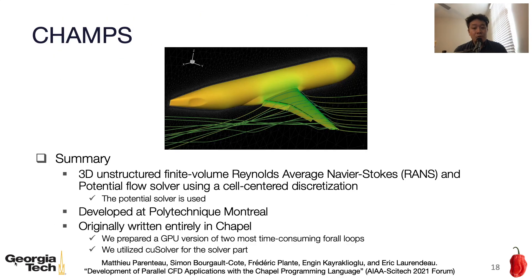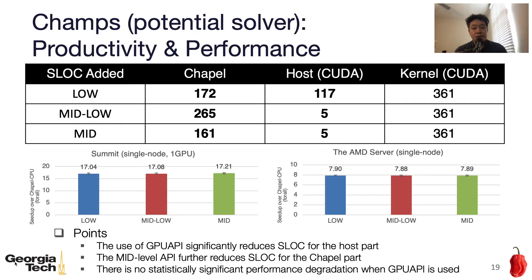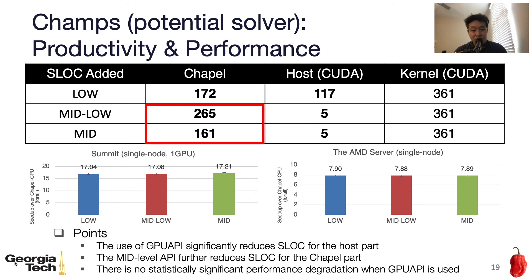The first application is CHAMPs, which is a CFD application that is a Reynolds-averaged Navier-Stokes and potential flow solver. In this evaluation, we used the potential solver. The application is developed at Polytechnic Montreal and originally written entirely in Chapel. To enable GPU execution, we prepared a GPU version of the two most time-consuming forward loops, and we also utilized cuSOLVER for the solver part. The table shows source lines of code added for enabling GPU execution. The use of our GPU API significantly reduces source lines of code, and the mid-level API further reduces them. In this application, the use of GPU jagged arrays was quite effective in reducing source lines of code at the medium level.